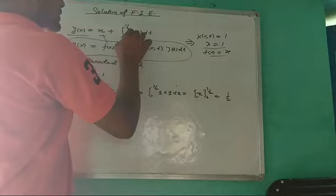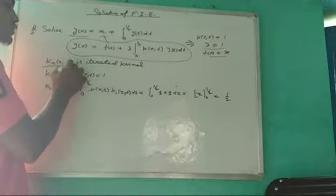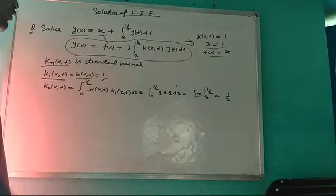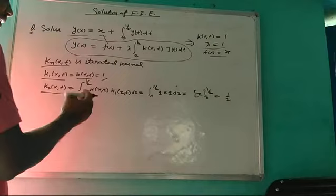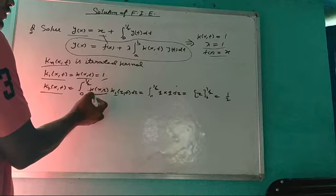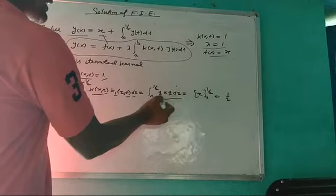k_n(x,t) is the iterative kernel. We know k_1(x,t) = k(x,t) = 1. For finding k_2(x,t), we use the formula: integral from a to b of k(x,z) · k_{n-1}(z,t) dz. Since n = 2, n−1 = 1, so it is k(x,z) · k_1(z,t) dz, and both values are 1. The integration of dz gives z, and after applying the limit 0 to 1/2, k_2 = 1/2.